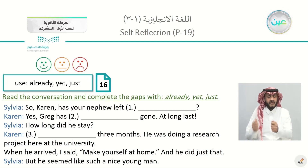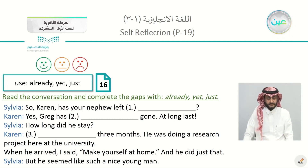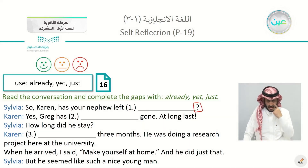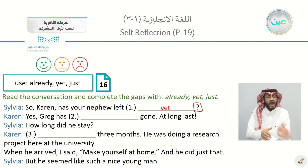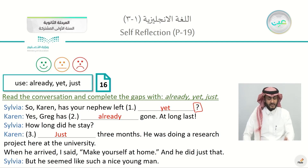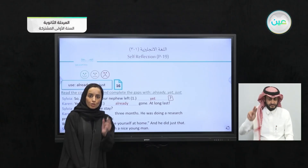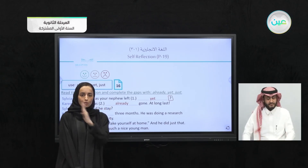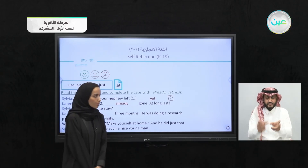Let's try this exercise: read the conversation and complete the gaps with 'already,' 'yet,' or 'just.' Karen asks, 'Has your nephew left yet?' — it's a question and 'yet' comes at the end. The answer: 'Greg has already gone. At long last.' How long did he stay? 'Just three months. He was doing a research project at the university.' Notice: check whether the sentence is affirmative or negative, a question or statement, and where in the sentence the word appears, and you can choose the correct expression.